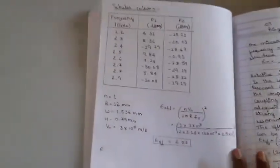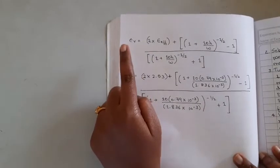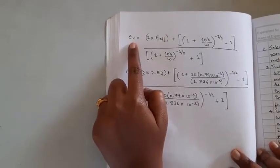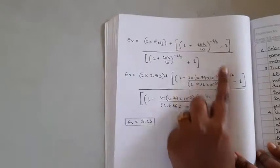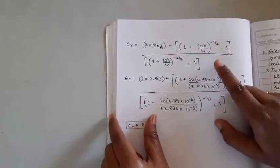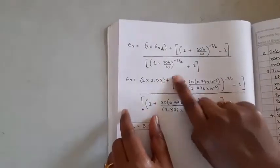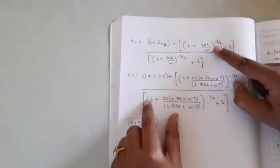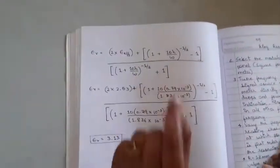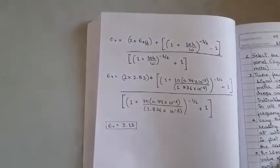This epsilon_r represents the relative permittivity, which is nothing but the dielectric constant of a material. The equation given is: 2 times effective permittivity times (1 plus 10H/W) to the power of minus 1/2, divided accordingly. Here H represents the height of the substrate of this ring resonator, and W represents the width of the substrate material. We are going to provide the data for this height and width of this particular material.